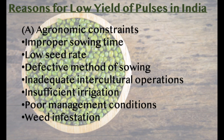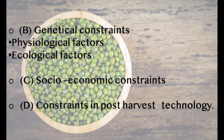Reasons for low yield of pulses in India: Agronomic constraints include improper sowing time, low seed rate, defective method of sowing, insufficient irrigation, poor management conditions, and weed infestation. Other constraints include genetical constraints, socio-economic constraints, and constraints in post-harvest technology.